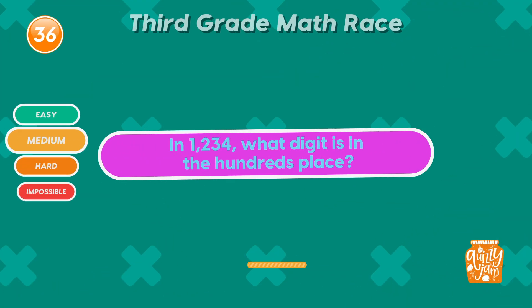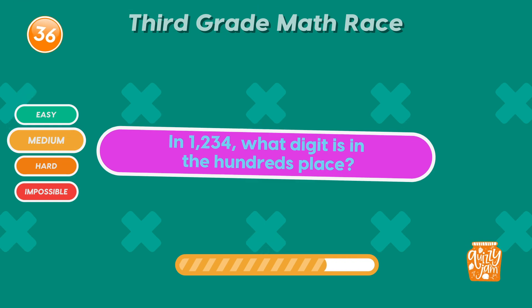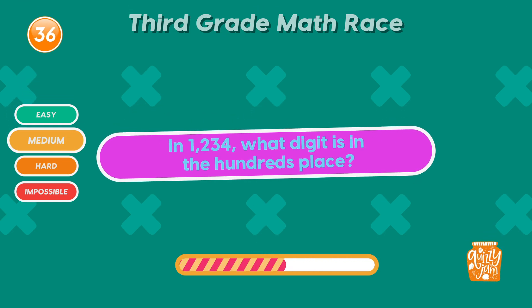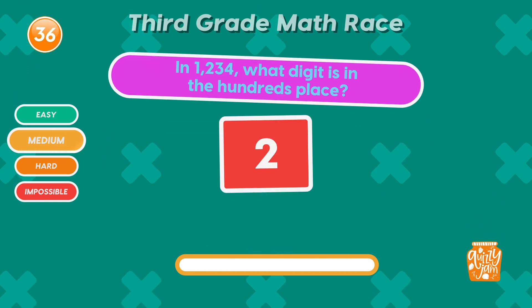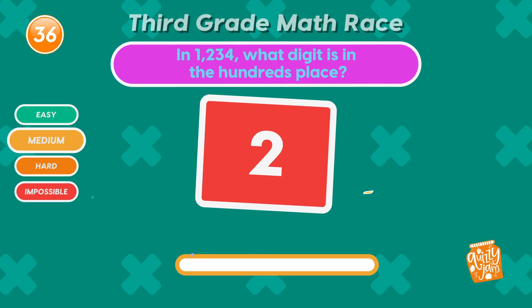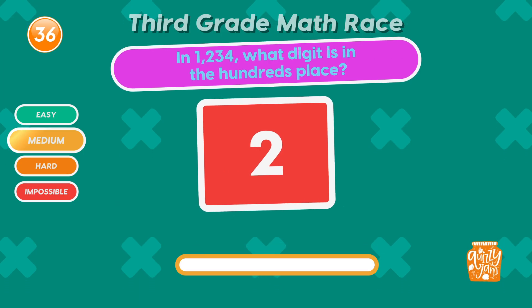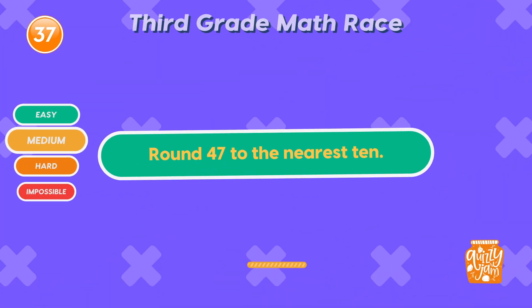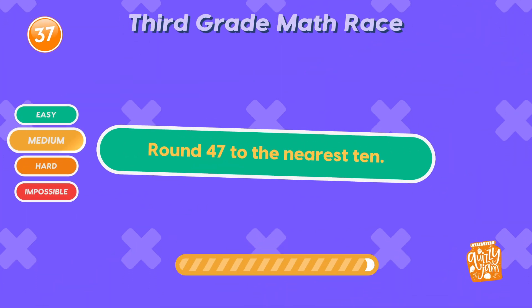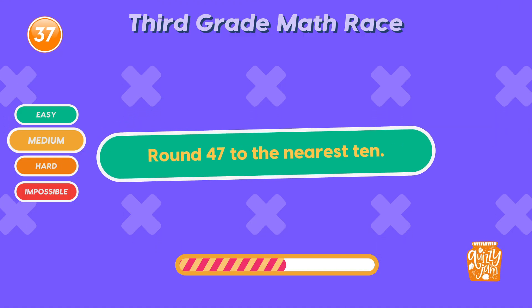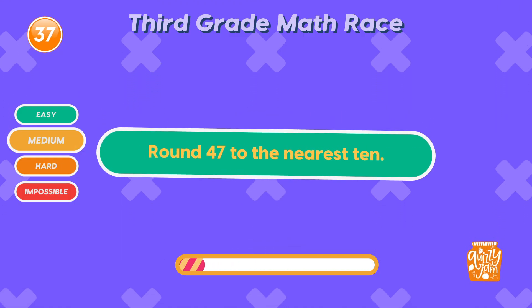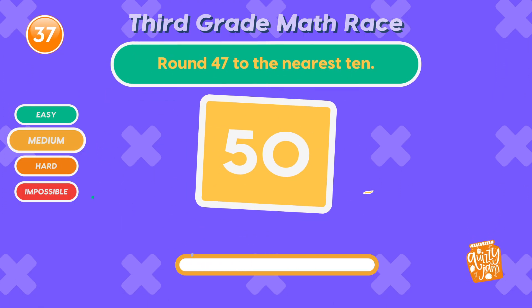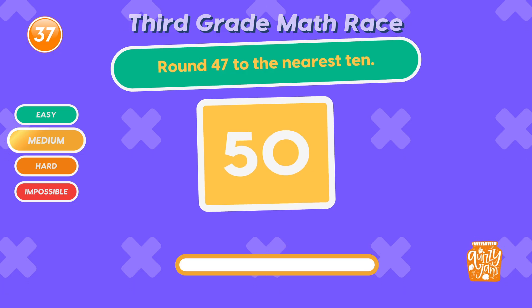In 1,234, what digit is in the hundreds place? 2! Sharp eyes! Round 47 to the nearest ten. 50! That was smooth!